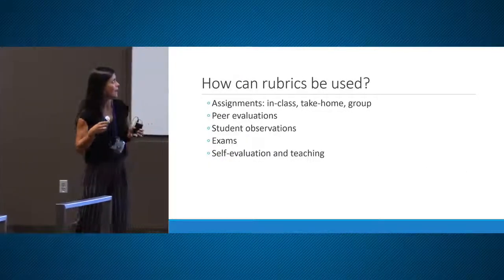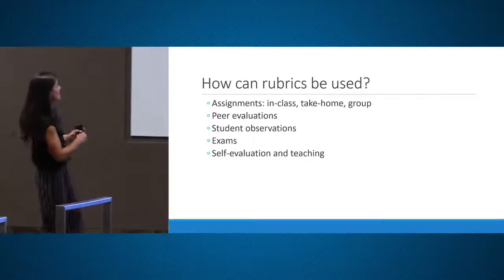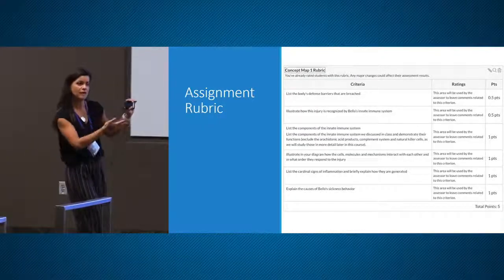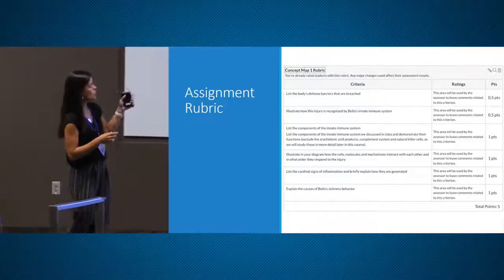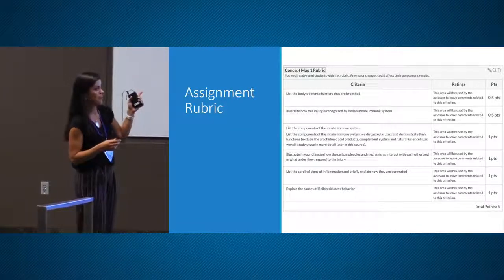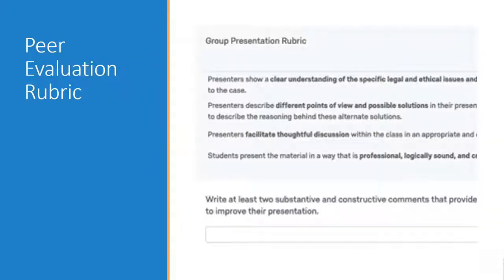Rubrics can be used to grade an assignment — this is an assignment rubric. This is the peer evaluation rubric. I have this in my ethics class when the students are presenting and their peers evaluate the presenters.